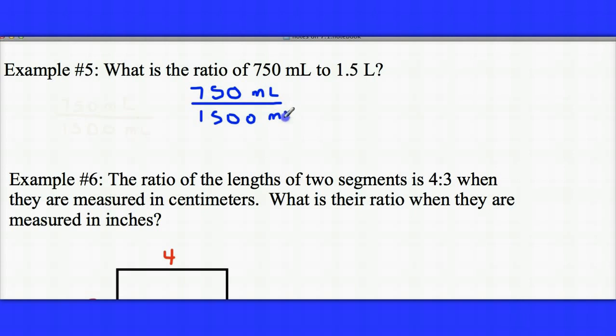So now that my units are the same, I can actually compare these. The units cancel, and 750 is half of 1,500, so we have a ratio here of 1 to 2.